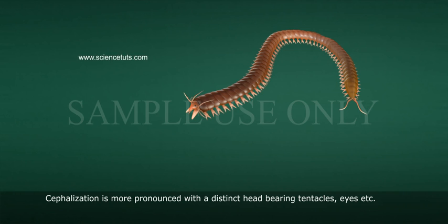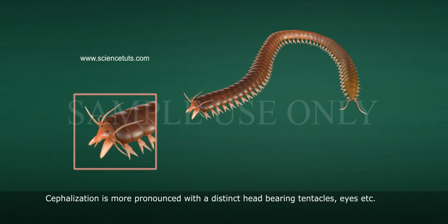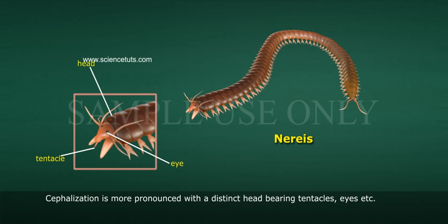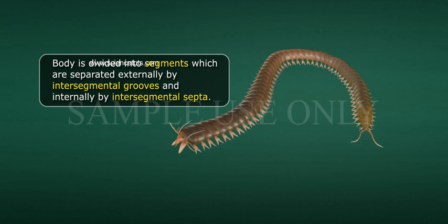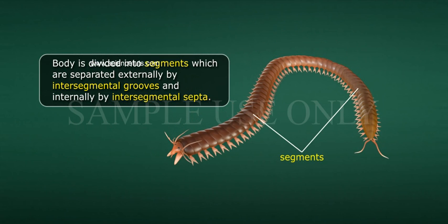Cephalization is more pronounced with a distinct head bearing tentacles, eyes, etc. They exhibit homonymous metamerism. The body is divided into segments which are separated externally by intersegmental grooves and internally by intersegmental septa.